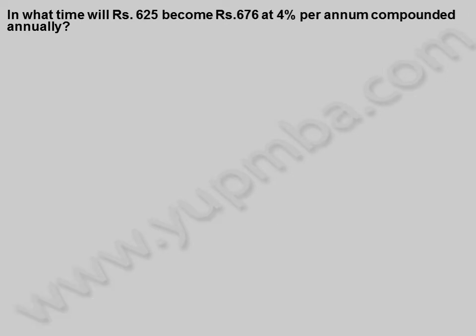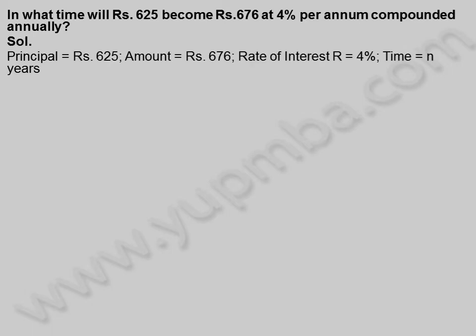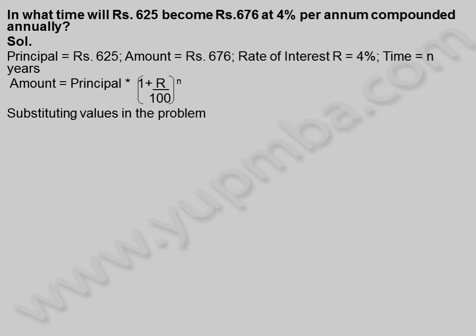In what time will 625 rupees become 676 rupees at 4% per annum compounded annually? Solution: Principle is equal to 625 rupees, amount is equal to 676 rupees, rate of interest r is equal to 4%, time is equal to n years. Amount is equal to Principle into 1 plus rate by 100, whole power n. Substituting values: 676 is equal to 625 into 1 plus 4 by 100, whole power n.